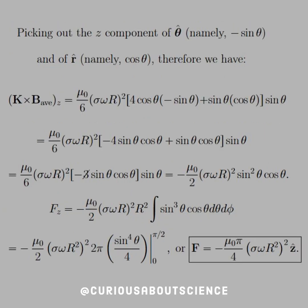Now let's execute this. Picking out the z component, which is all we want, of θ̂, namely negative sine, and of r̂, namely cosine.